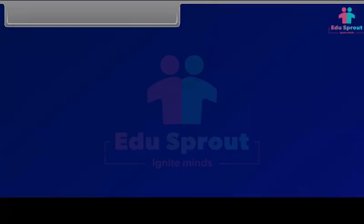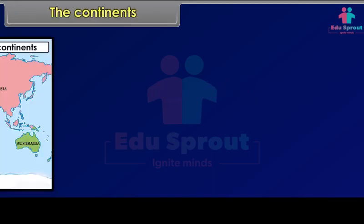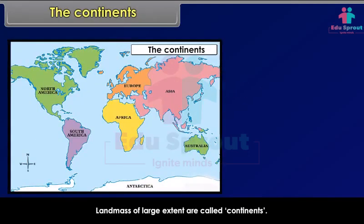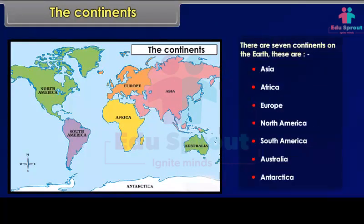Large land masses of large extent are called continents. There are seven continents on the Earth. These are Asia, Africa, Europe, North America, South America, Australia, and Antarctica.